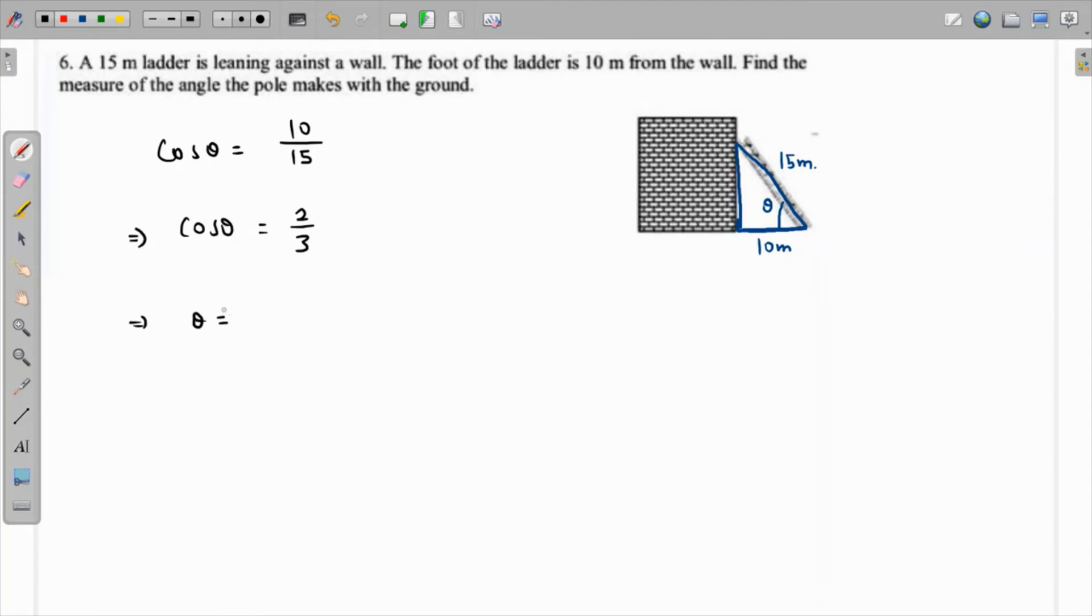So the value of theta from here comes out as, let me grab my calculator, 2 over 3 and cos inverse of this value, which is coming as 48.19 degrees up to 2 decimal places.